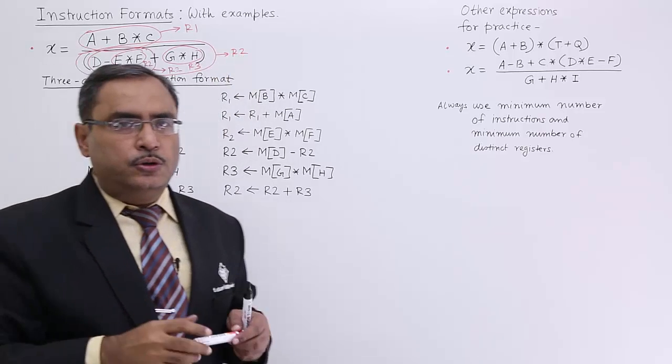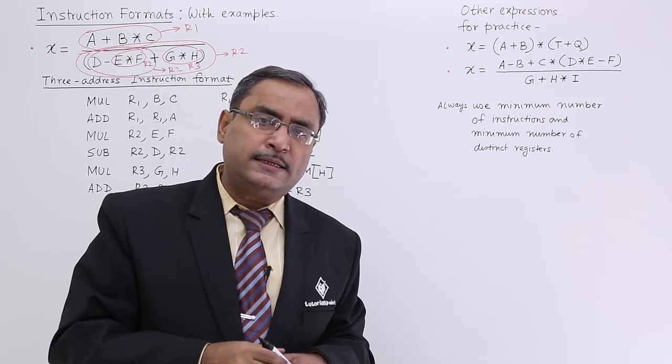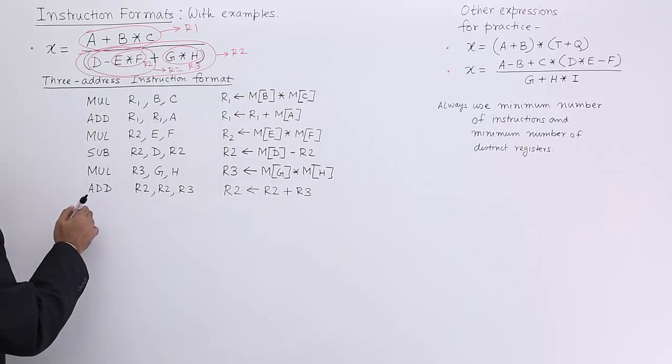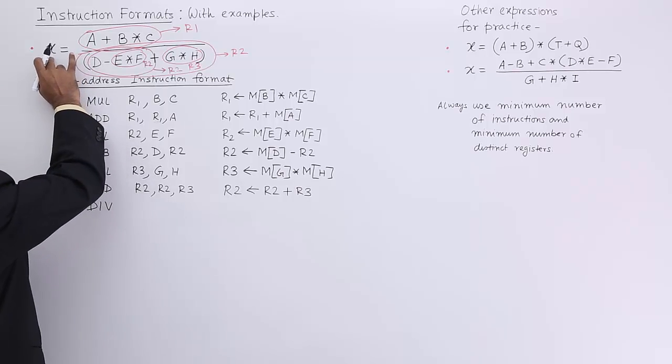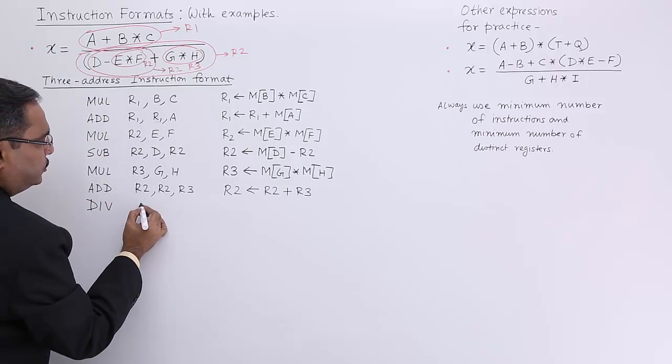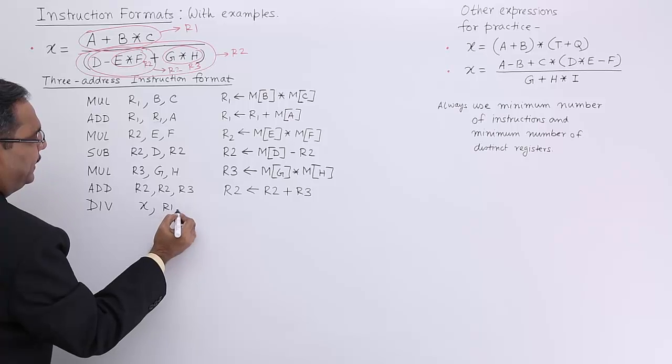What I am supposed to do? I am supposed to do R1 by R2, that will give me the answer. Let me check. Now I shall go for div. Where to keep this result? In x. I am going for x comma R1 comma R2.